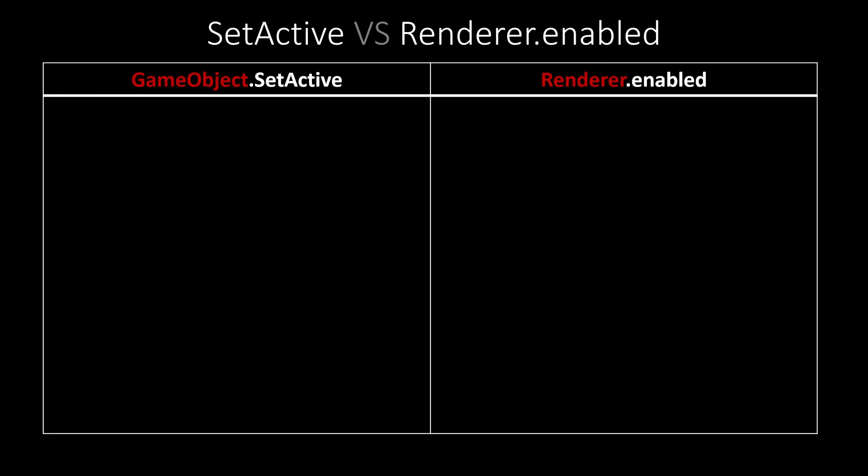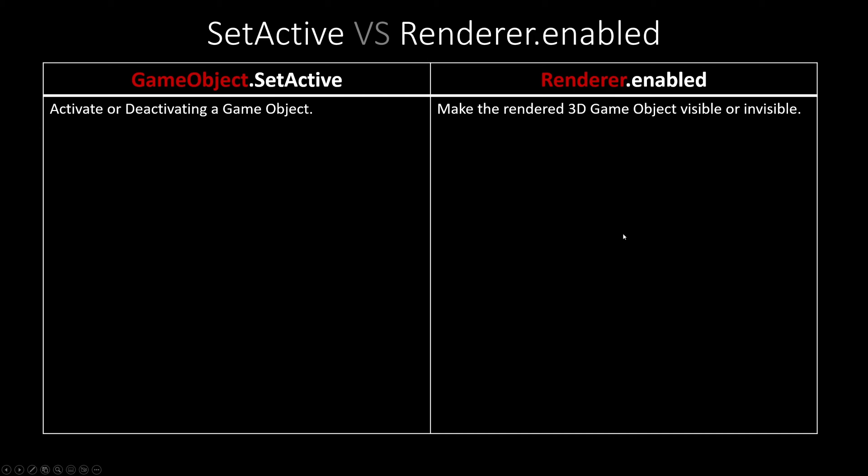Both setActive and renderer.enabled can be used to make a game object invisible, but there is a significant difference between them. setActive can activate or deactivate a game object, while renderer.enabled can make a 3D game object's renderer visible or invisible.